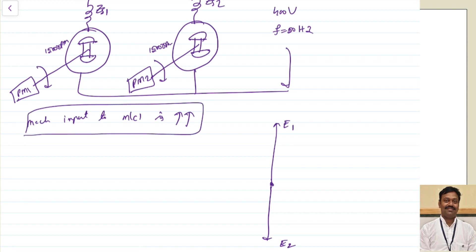When the mechanical input to machine 1 increases, the speed of the machine increases. When the speed increases, the frequency of machine 1 automatically increases. Since phasors are represented in the counterclockwise direction indicating leading, because of this change in frequency or speed, the EMF temporarily becomes leading by some angle compared to the previous E1 value. Let us call this E1 dash. Remember there is no change in the magnitude of EMF because the excitation is the same - only there is a displacement by some angle.